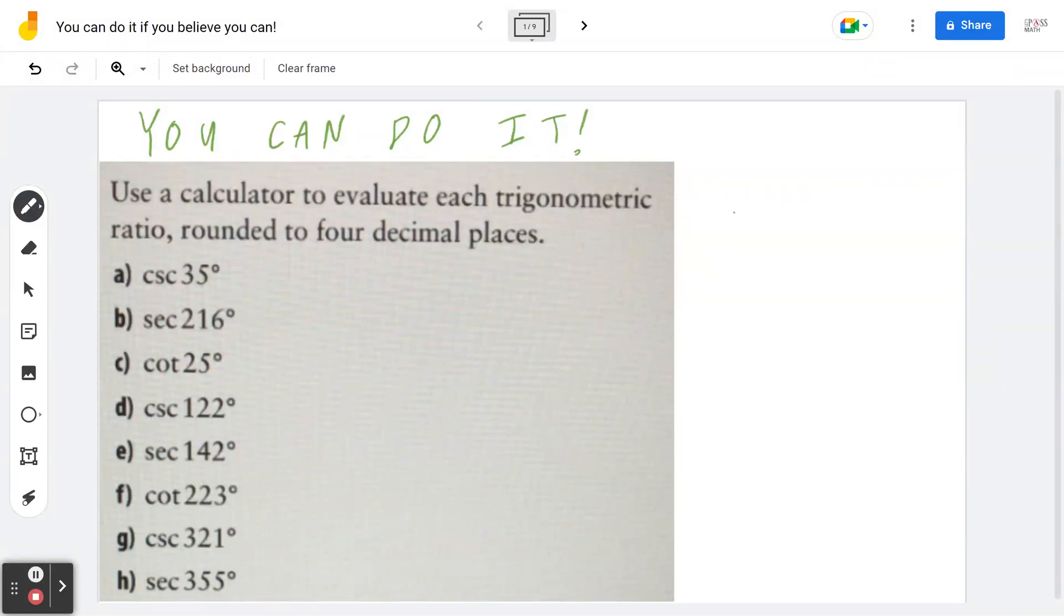Hi everyone, let's take a look at the following example. Use a calculator to evaluate each trig ratio rounded to four decimal places.